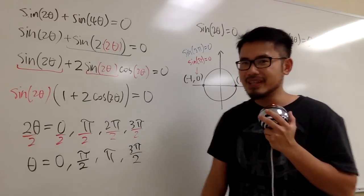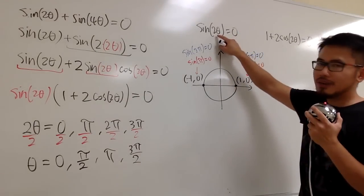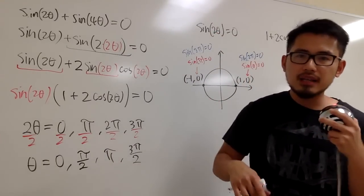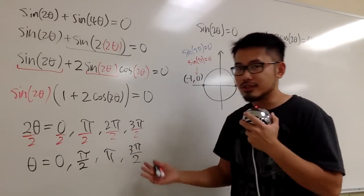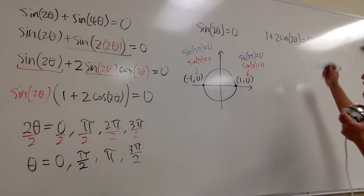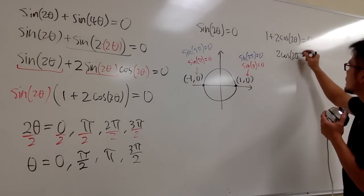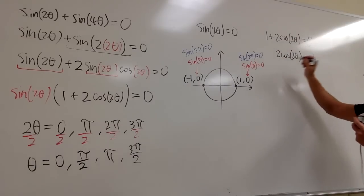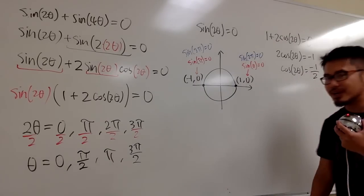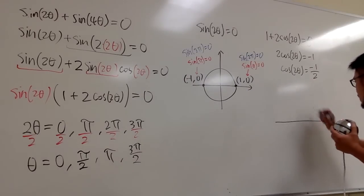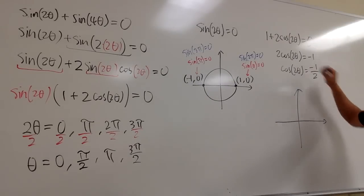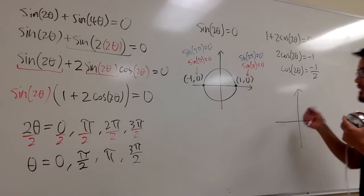Whenever you have a double angle like sine of 2 theta, you may end up with twice as many solutions as usual. Now let's work on the second equation: 1 plus 2 cosine of 2 theta equals 0. Subtracting 1 from both sides gives 2 cosine of 2 theta equals negative 1, and dividing by 2 gives cosine of 2 theta equals negative 1 over 2. Since this is a fraction, we draw a triangle.